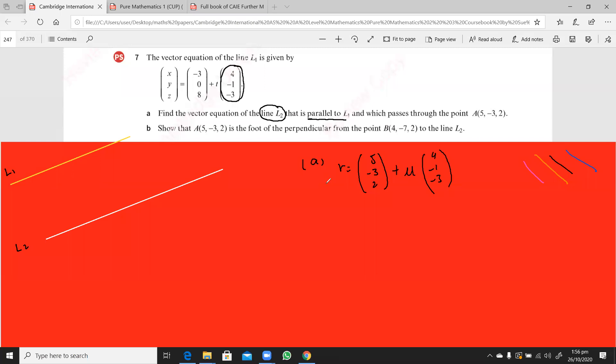Now it says, let's show that A, which is somewhere over here on this line L2, which is 5, minus 3, 2, A is the foot of the perpendicular from the point B.